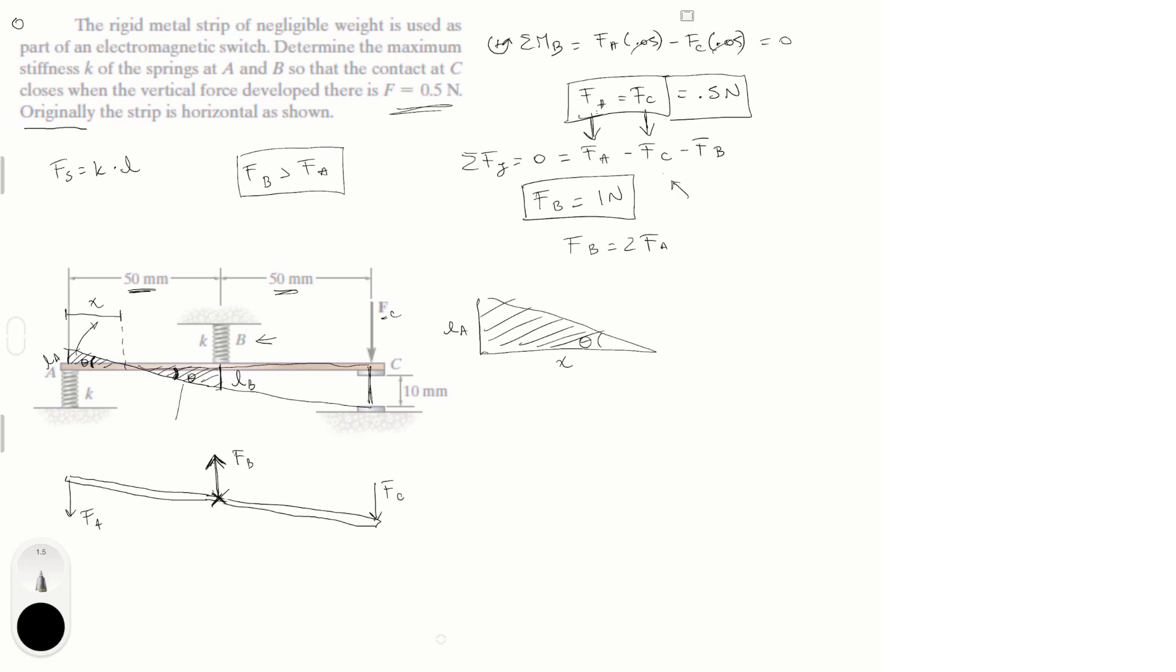And this triangle, I'm going to redraw it right here. And I'm going to call this length from here to here, which is at the point where it crosses the thing, I'm going to call this X. So this triangle right here with an angle theta has a length of X right here and a length of LA right here. And then this triangle, I'm going to redraw it right here, which also has a theta.